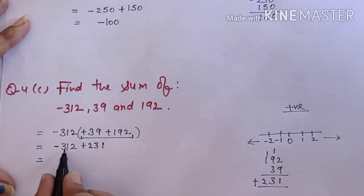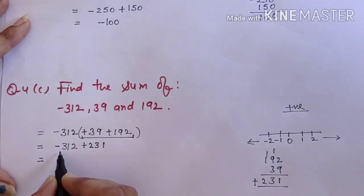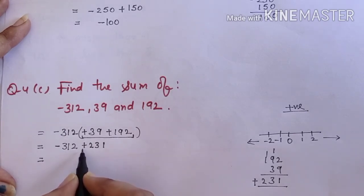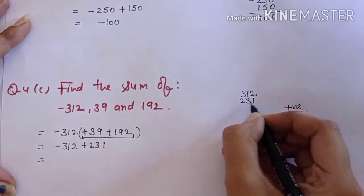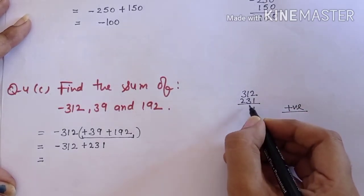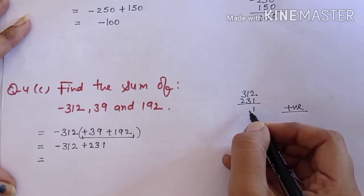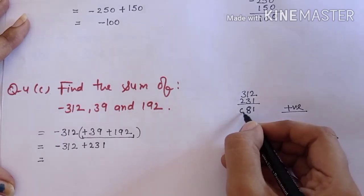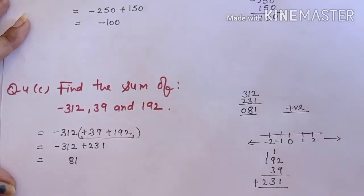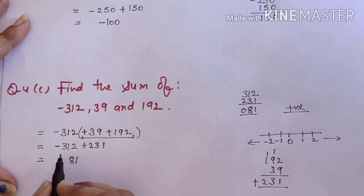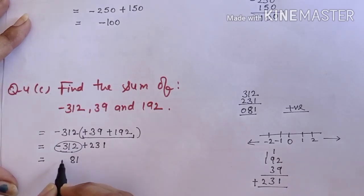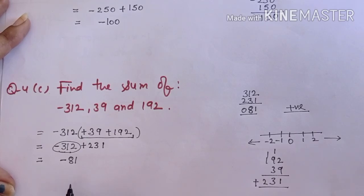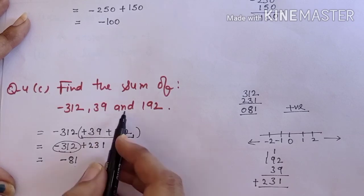Next: we have different signs so we subtract. 312 minus 231 equals 81. The largest number is 312, its sign is negative, so our answer is minus 81. Clear?